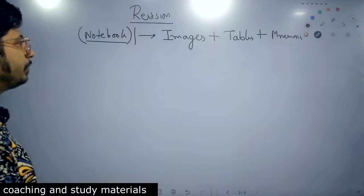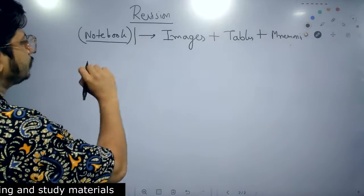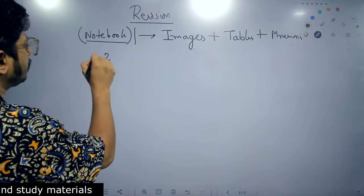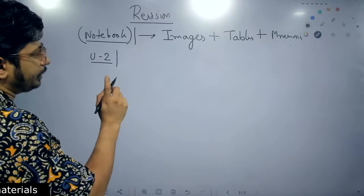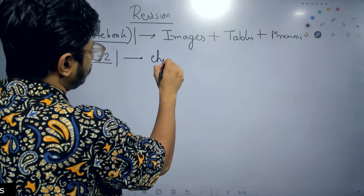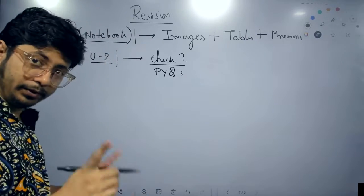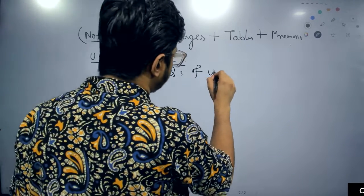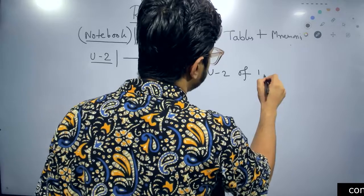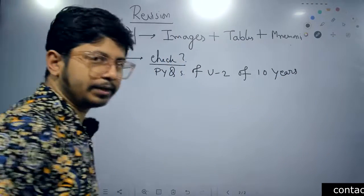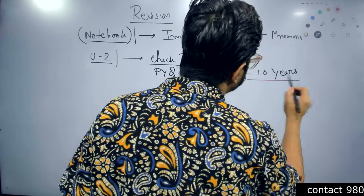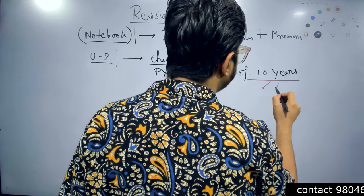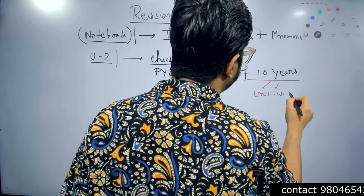Once this preparation is done, let's say you covered Unit 2 — Cell Biology. After covering Unit 2, you need to check your score after solving the PYQs of Unit 2 from the last 10 years. This is something important. For this, you need the last 10 years CSIR Net papers organized unit-wise. There are books where you can get unit-wise question papers of the last 10 years of CSIR Net.